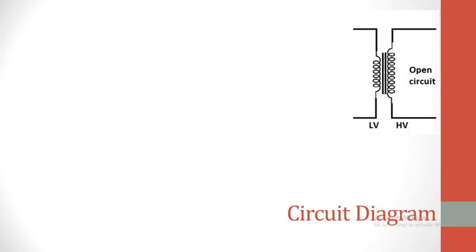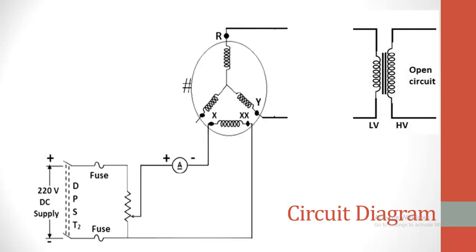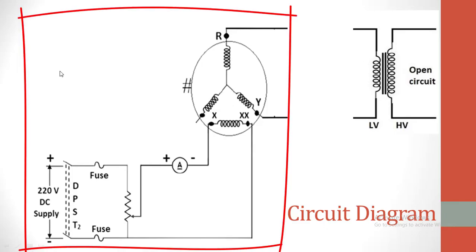This is the transformer circuit alone. The secondary is kept open. On this transformer, we should conduct an experiment to separate the losses. This experiment should be conducted at variable voltage and frequency by maintaining the ratio of V/F constant. Hence, we are using the synchronous generator.